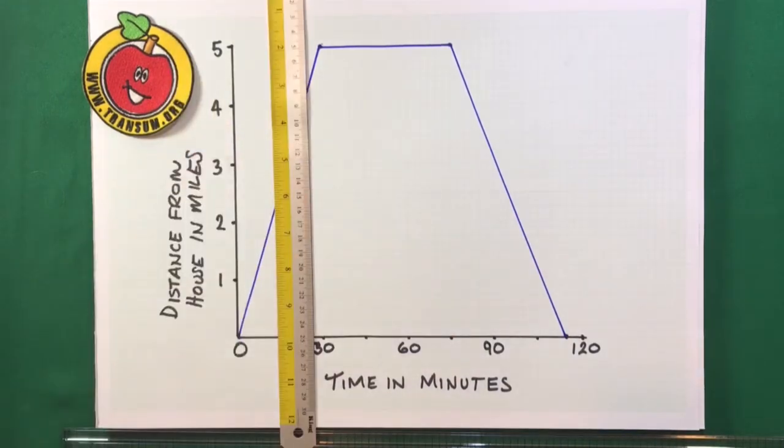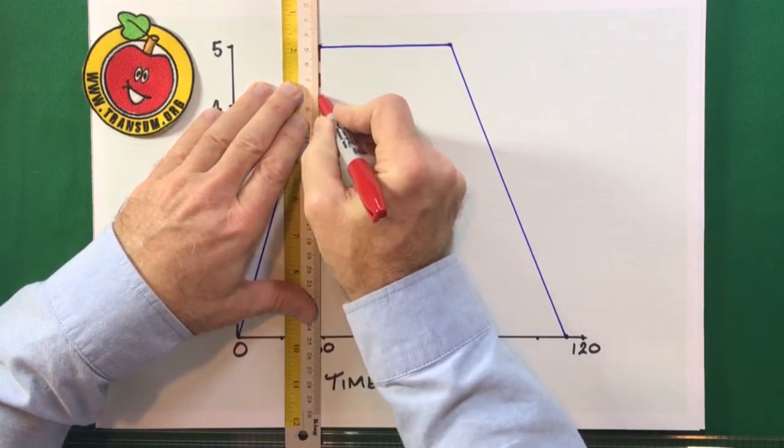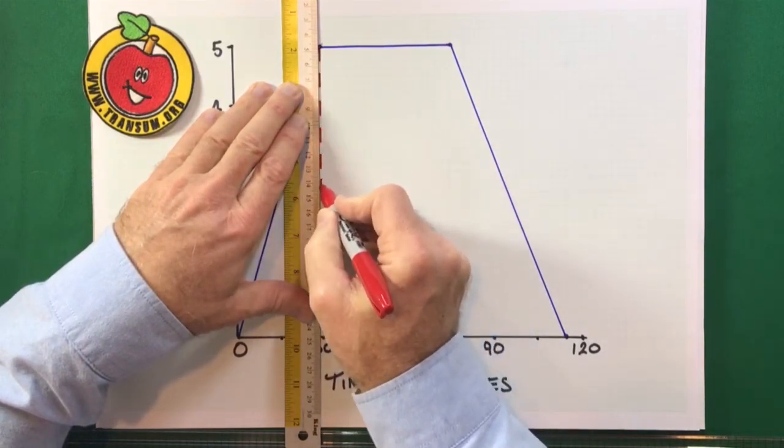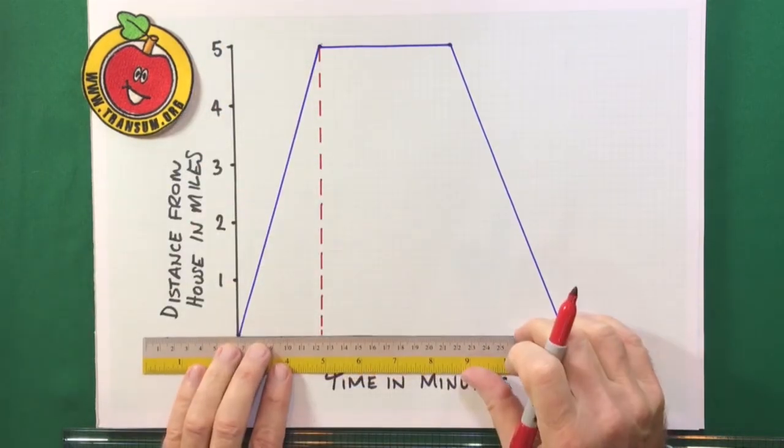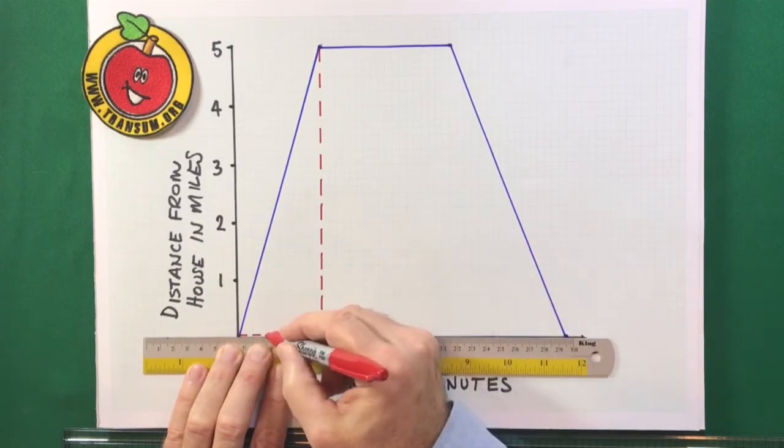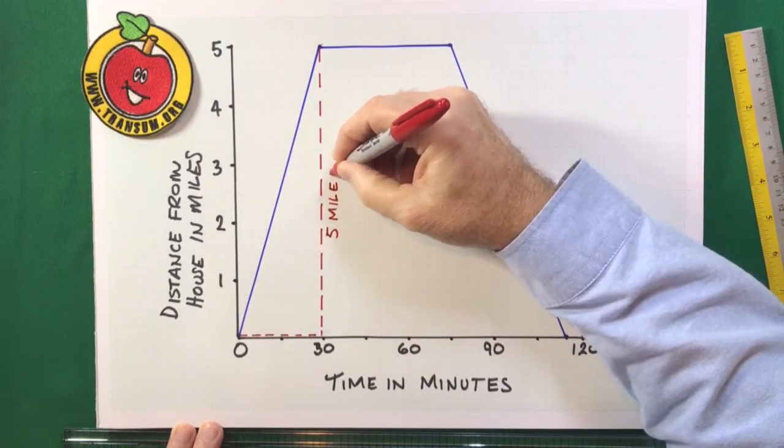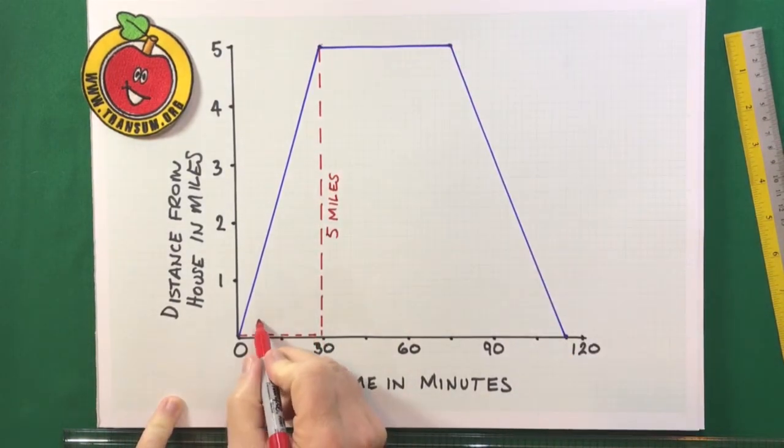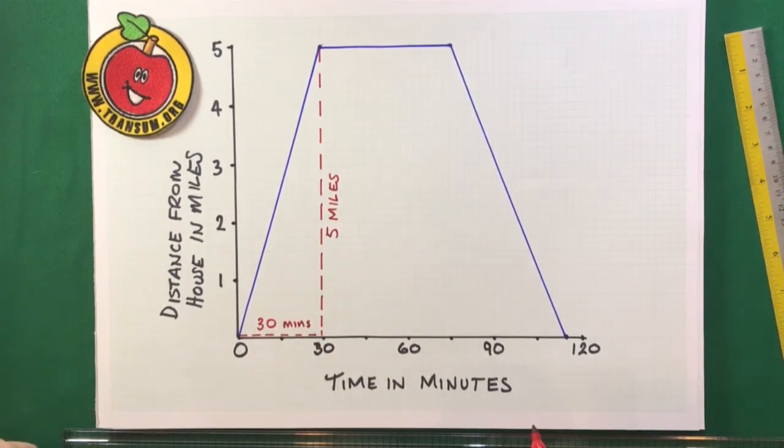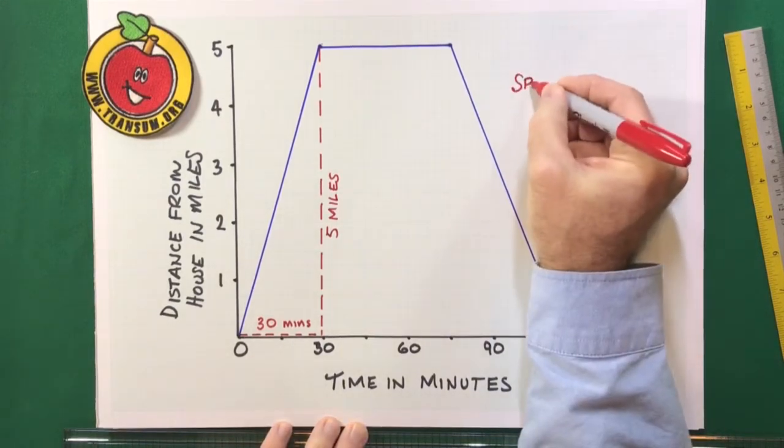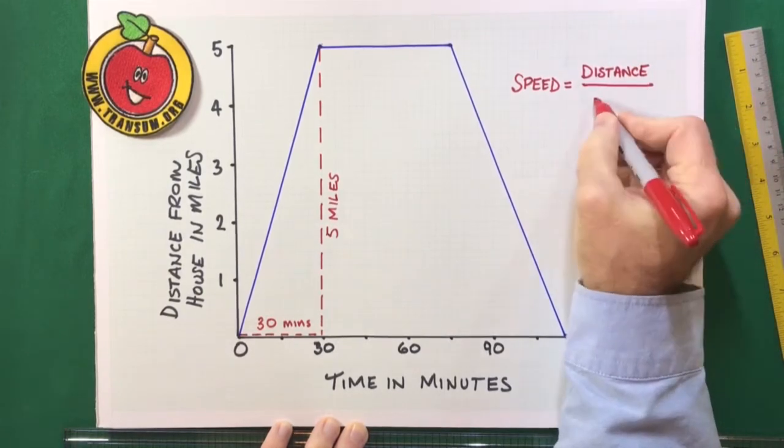So, what was his speed for the first part of the journey? Well, what we need to do is remember that the speed is the gradient of the line. And gradient is worked out by dividing the rise by the run. So, I've worked out that the rise is the five miles. That's the distance to the restaurant. And then the run is the time, which in this case is 30 minutes.